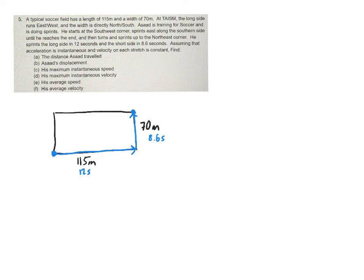All right, so here we go. The distance Asad traveled. You should be able to just go through and say it was 115 meters along the south side and 70 meters on the other side. And so I'm going to add those together. I get 115 plus 70, which gives me 185 meters. So that's your first answer.